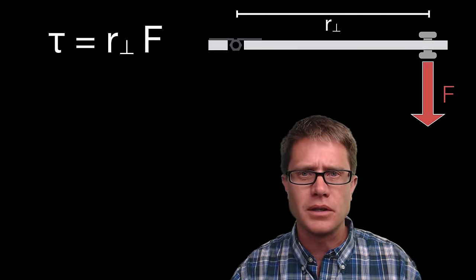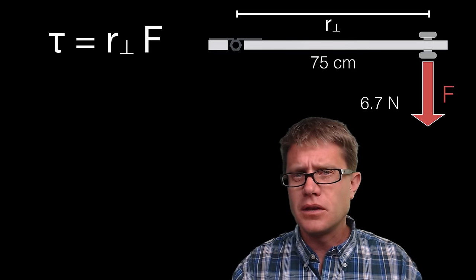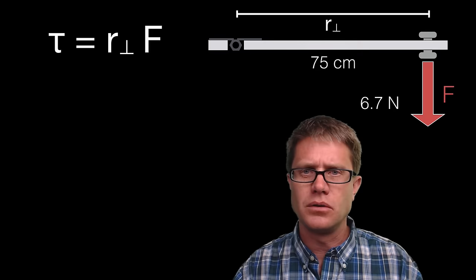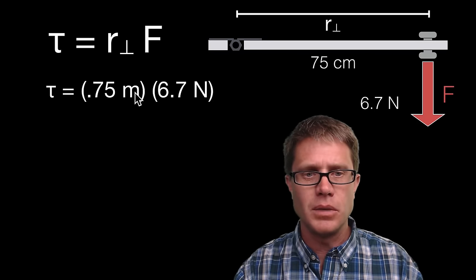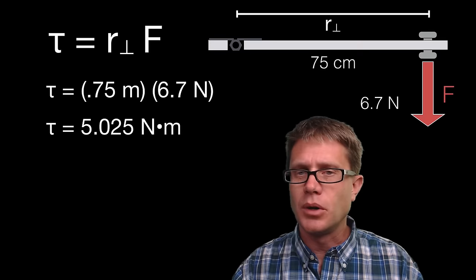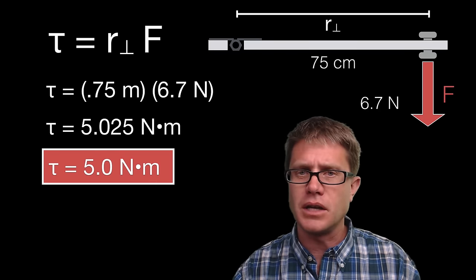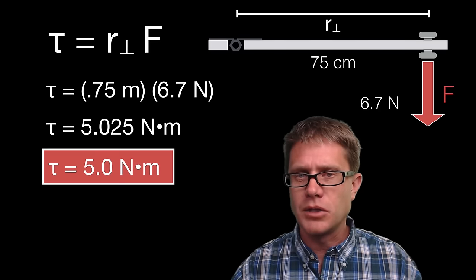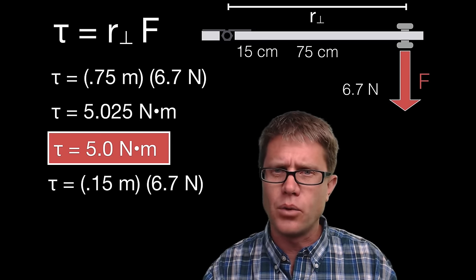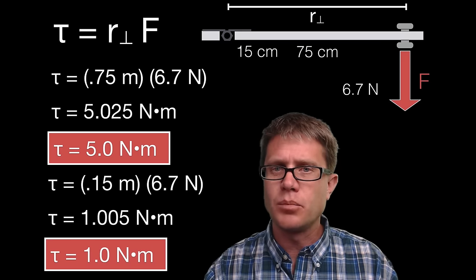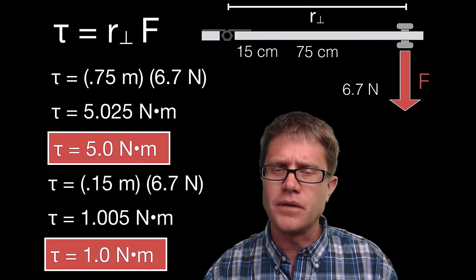In torque we multiply the lever arm times the force. The equation is Tau = R-perpendicular × F. Let's add numbers: say the doorknob is 75 centimeters from the hinge and we apply a 6.7 newton force. Converting to SI units (0.75 m) and multiplying gives us 5.0 newton meters of torque. Now if we move the doorknob to 15 centimeters from the hinge, keeping the same force, we get only 1.0 newton meter — one fifth of before, because the lever arm is one fifth what it was.